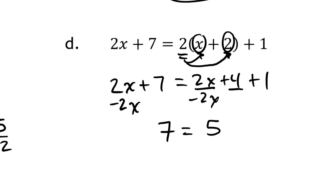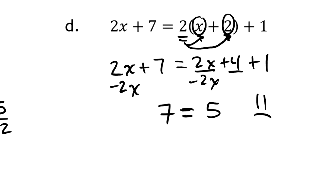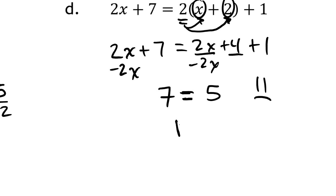If I subtract 2X from each side, I'm left with a conundrum here. On the one side I have 7 and on the other side I have 5. Well, this is clearly a contradiction. There is no way that 7 is 5. So we've seen this before. When we encounter a contradiction like this, we have to say that there is no solution.